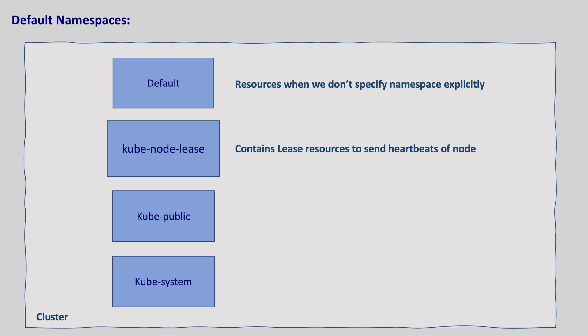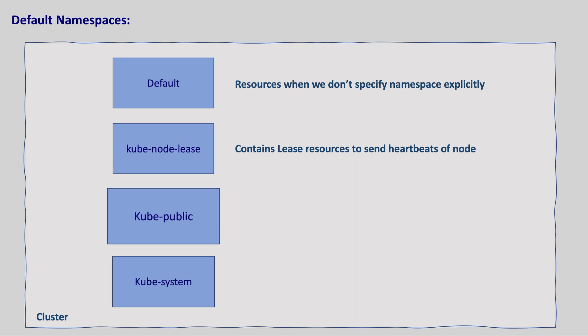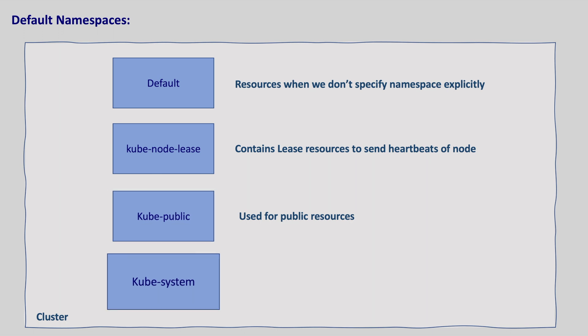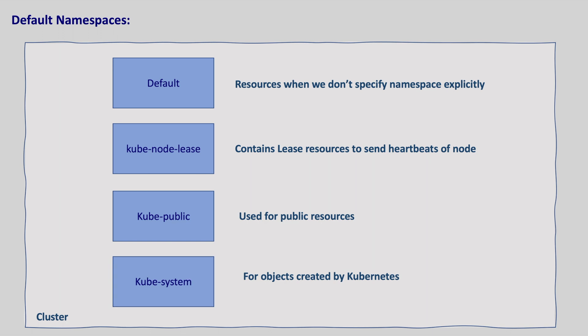The third namespace is kube-public. This namespace is used for public resources and is not recommended for use by users. This namespace is open to all users with read-only access and is reserved for cluster usage — if any resources should be visible or reachable throughout the whole cluster. The last namespace is kube-system, which is the namespace for objects created by the Kubernetes control plane. And of course we can create our own namespaces too.